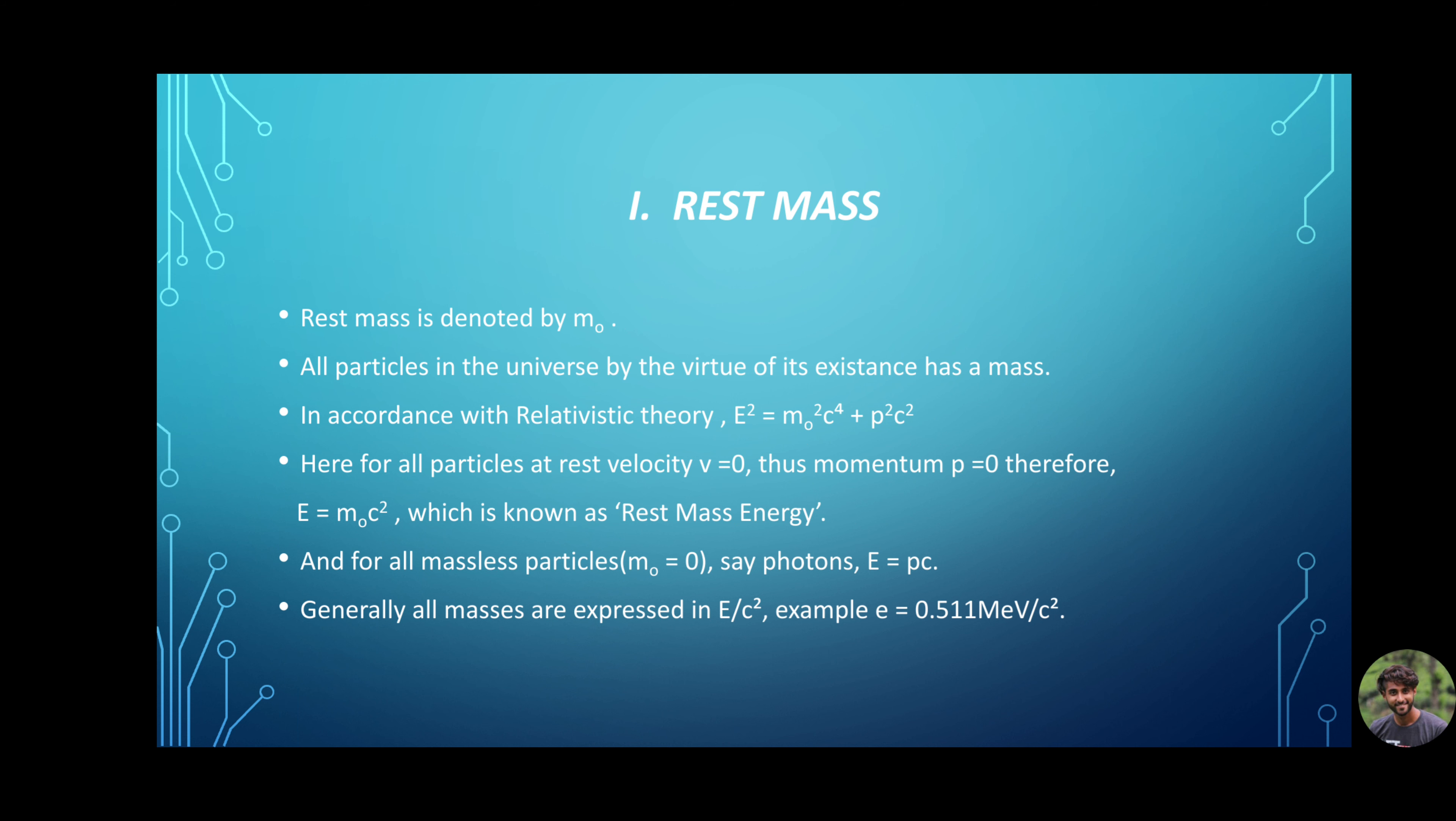First, rest mass. All particles in the universe, by the virtue of its existence, has a mass, either low or high. In particle physics, in accordance with the relativistic theory, we relate energy and mass by the general formula, E = √(m₀²c⁴ + p²c²). For all particles that are at rest, velocity v = 0. Momentum p = 0. Thus, the formula becomes E = m₀c², which is also known as rest mass energy.